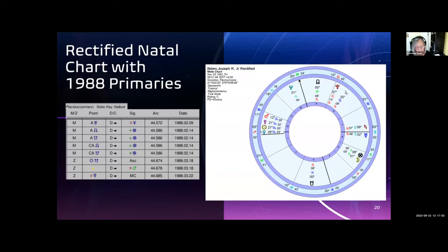I ran the primary directions again with the new birth time and more significators than just the angles, and we see that the antiscion and contra-antiscion in the 1988 events of the nodes directed to the part of fortune, which, as I mentioned, is also a significator of life and well-being.